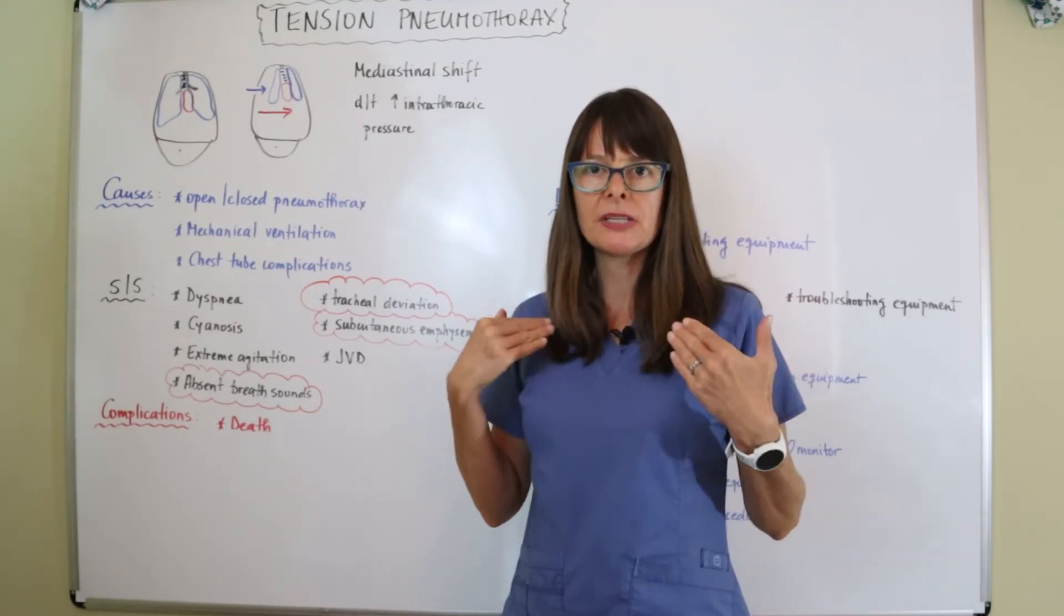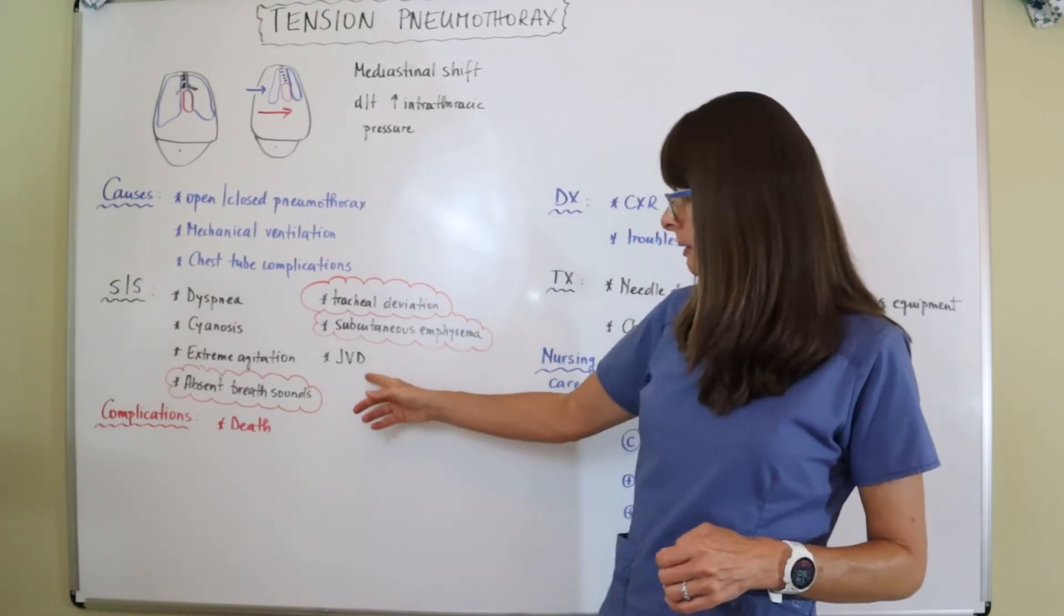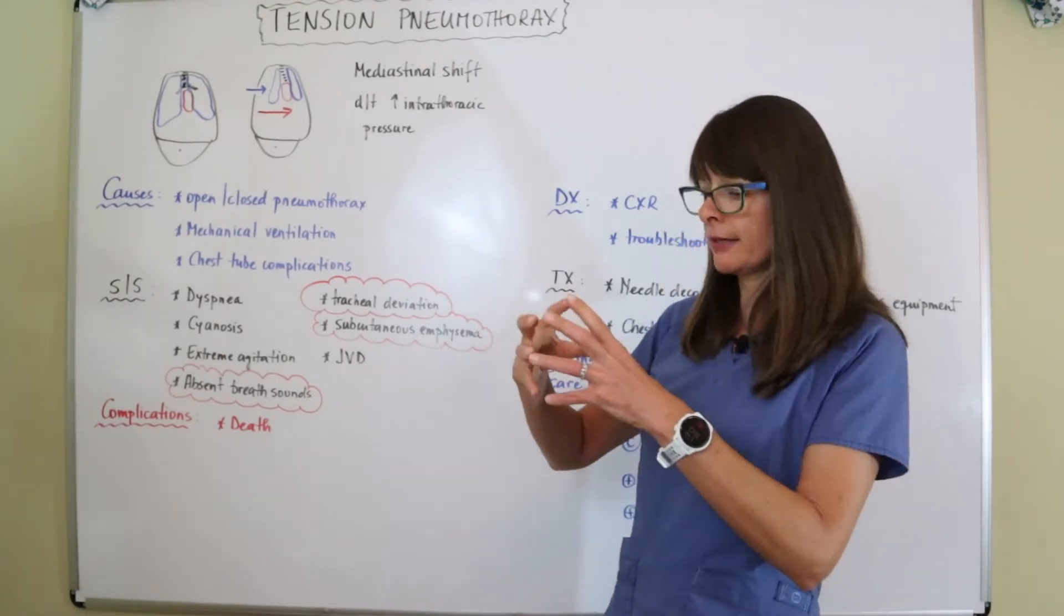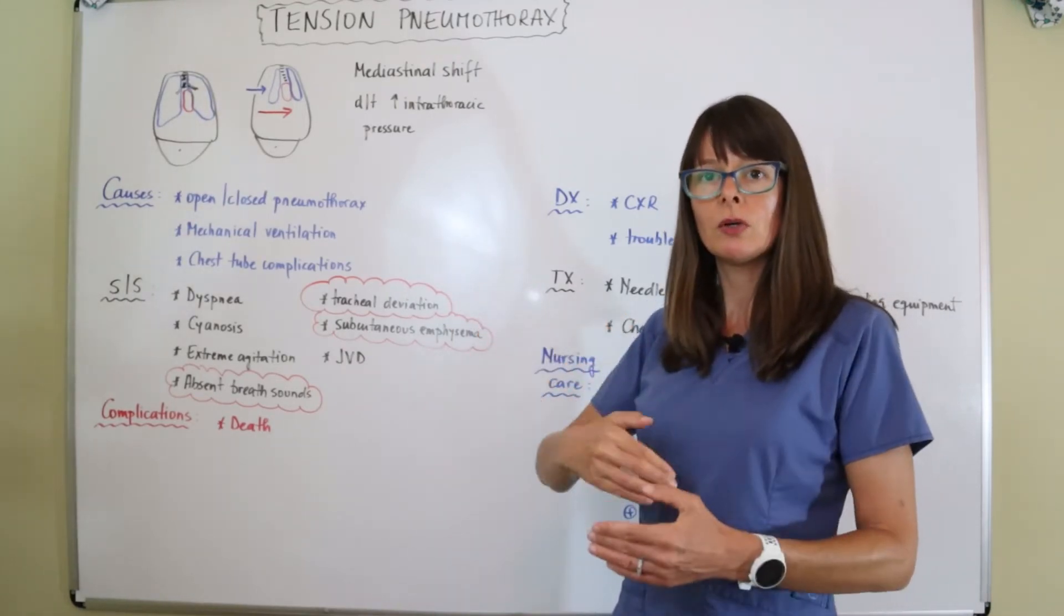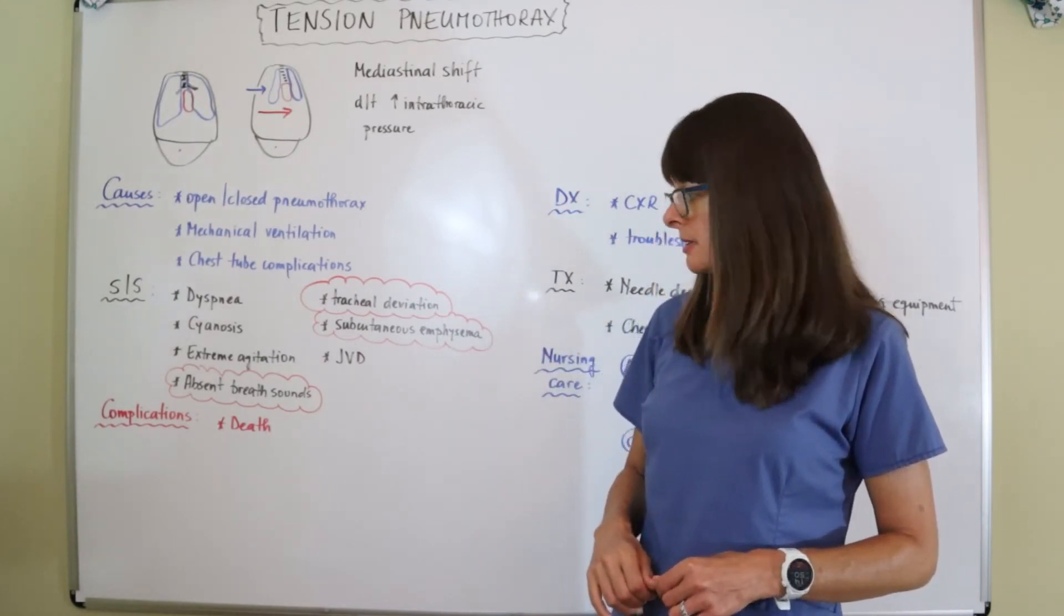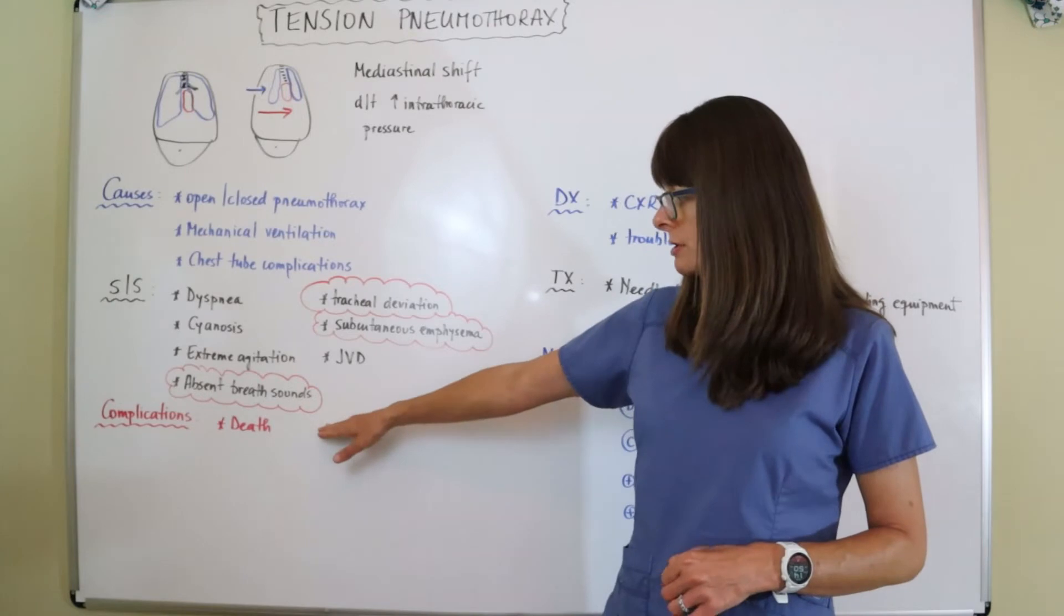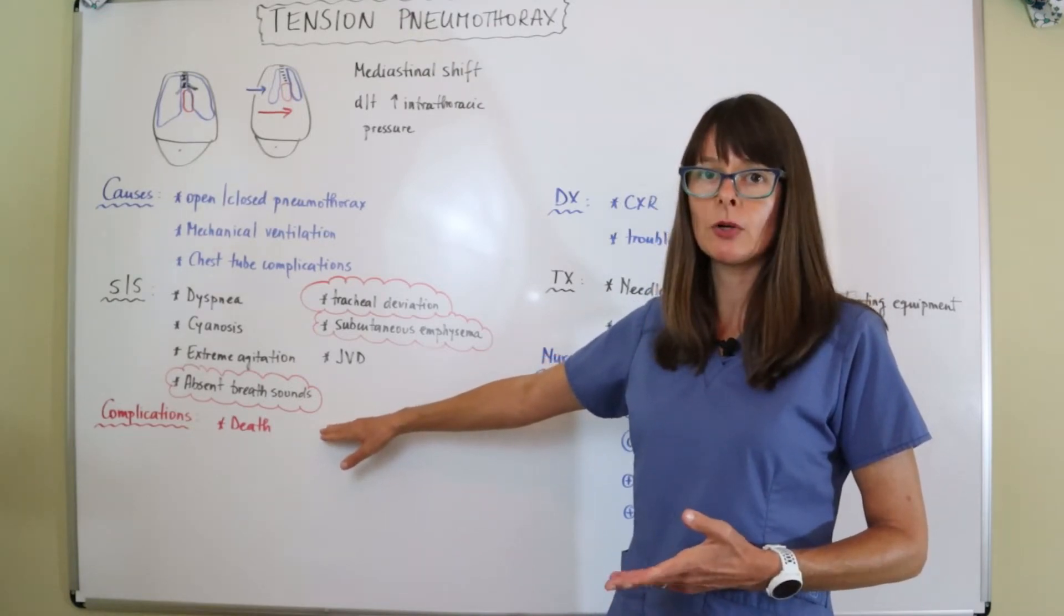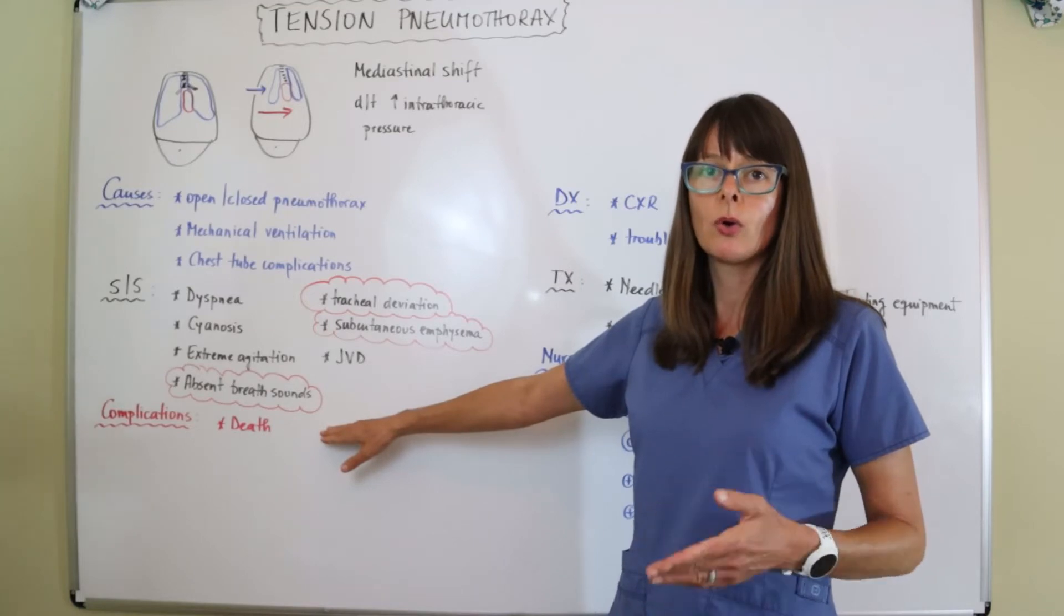And then the patient might also have JVD, jugular venous distension, because now the heart is not able to fill and that blood is going to back up into the jugular venous system. Complications: not too many, but unfortunately death is the only thing that can happen here if we don't interact or act quickly here to resolve this tension pneumothorax.